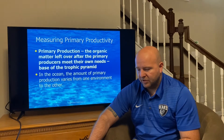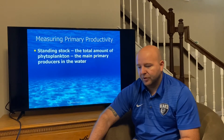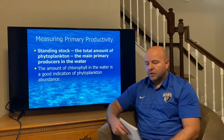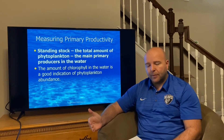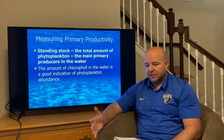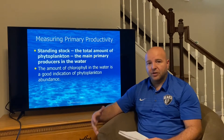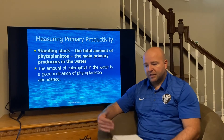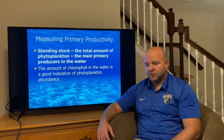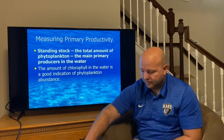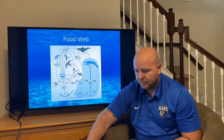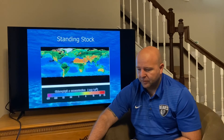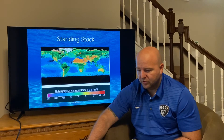Measuring primary productivity: we want you to know the definition of standing stock, which is how marine scientists get a feel for how much primary production is happening within an ecosystem. They measure the amount of phytoplankton in that region — your standing stock is how much phytoplankton there is — and that gives a pretty good measurement of how much primary production is occurring. There's an image showing concentrations of primary producers around the world.